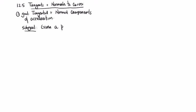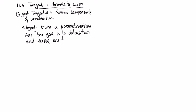Given a parametrization R of t, the goal is to obtain two unit vectors — one tangent to the curve, and one perpendicular, or normal. That's like with normal plane, normal vectors to a plane — so normal meaning perpendicular here.